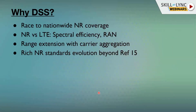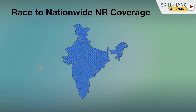Moving to the race to nationwide NR coverage. Better spectral efficiency when comparing LTE with NR — NR has much better spectral efficiency. Also, range extension with carrier aggregation. This is shown on a map of India, demonstrating that you can achieve nationwide coverage with DSS in low bands — more coverage hotspots, fewer coverage gaps, and fewer sites to deploy. It won't deliver the highest capacity — for high capacity you need high bands — but from a coverage perspective, it's very good.